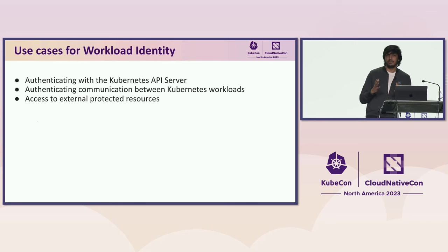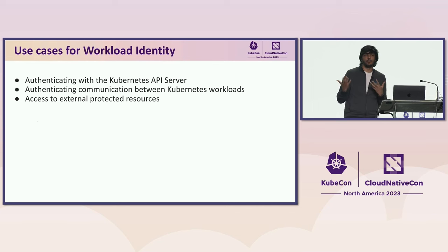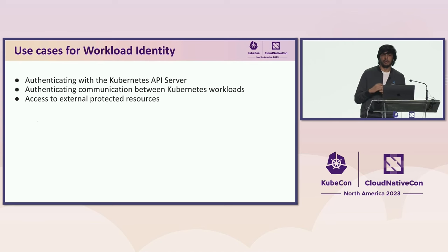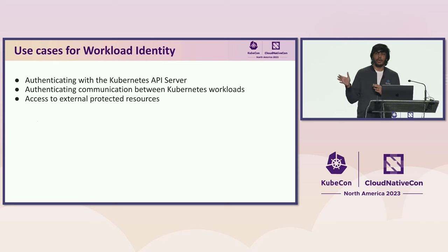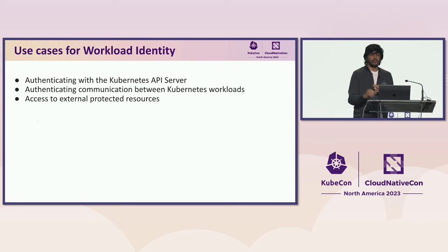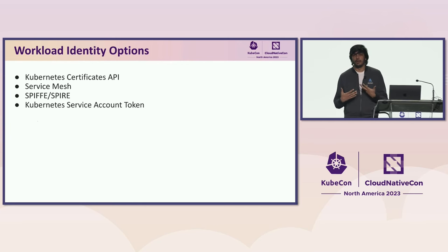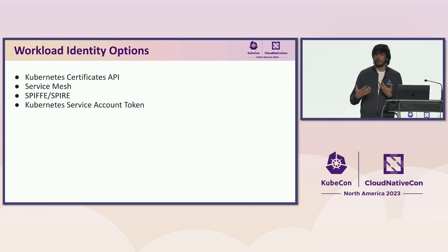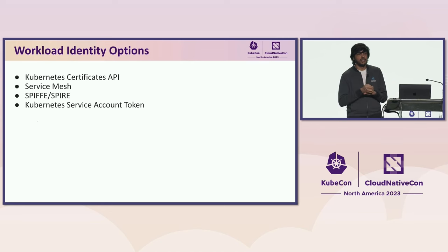The first two scenarios have been broadly covered in other talks. For the purpose of this talk, we want to focus mainly on the third one: trying to access external protected resources using workload identity. When we look at workload identity options, this is not the entire list, but the first one is the Kubernetes Certificates API.